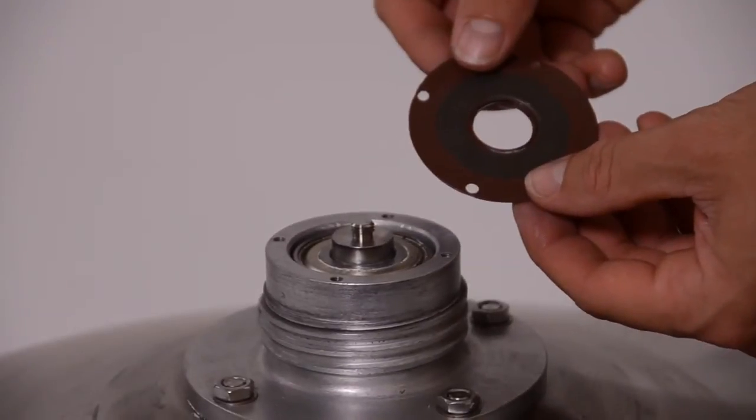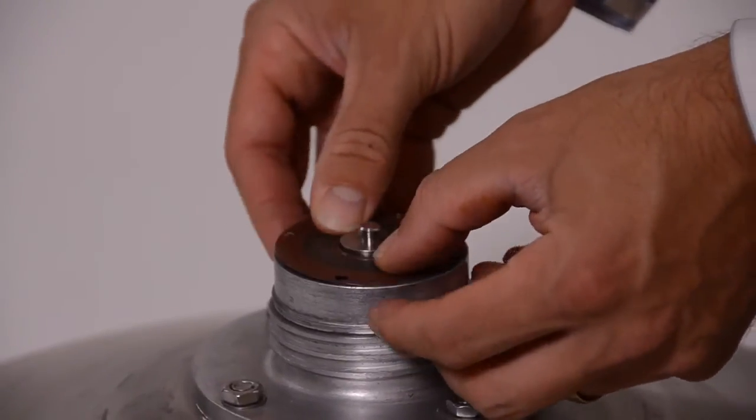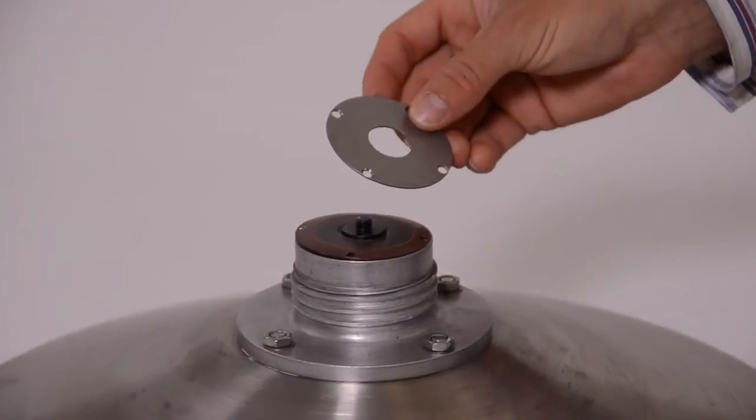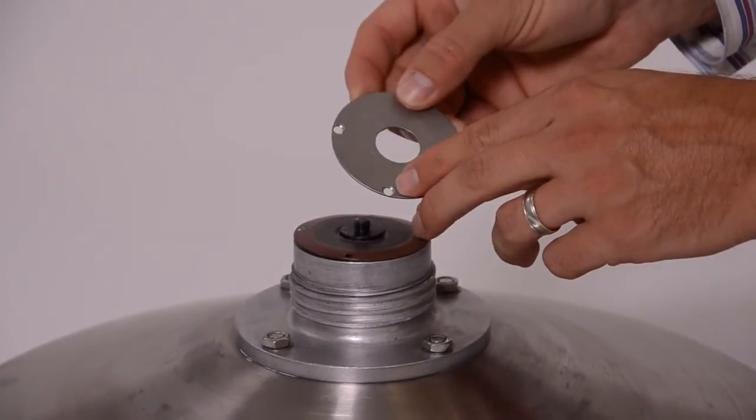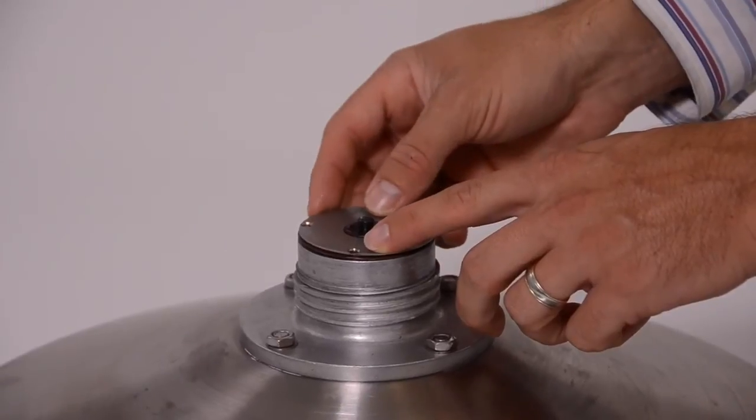Next, place the Viton bottom seal over the bottom of the drive shaft. Place the bottom plate over the Viton seal and secure it by screwing in the three or four screws into the bearing seat.